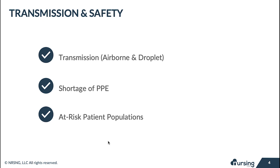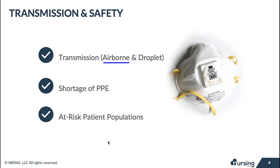From a nursing perspective, there is growing evidence that COVID-19 is an airborne illness, so N95 masks and full personal protective equipment are essential. A major challenge in the United States has been consumers purchasing masks, gloves, gowns, and goggles from stores, creating a serious shortage for healthcare workers who have been forced to reuse PPE. At minimum, nurses need an N95 mask, gown, eye protection, and face shields.